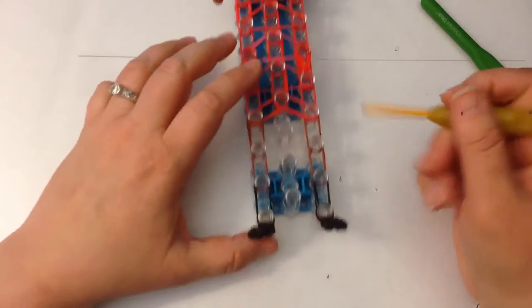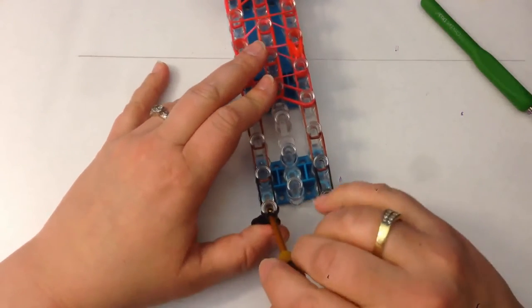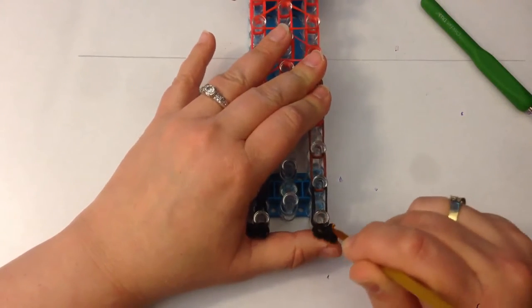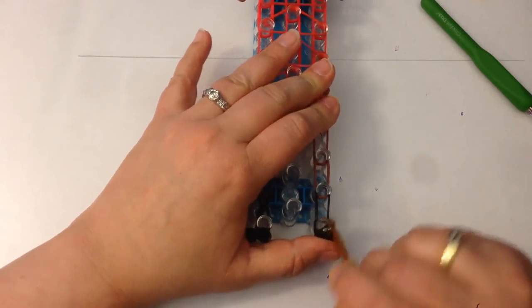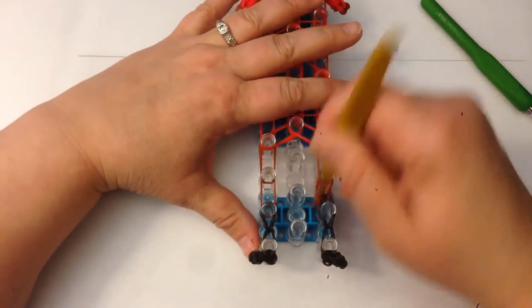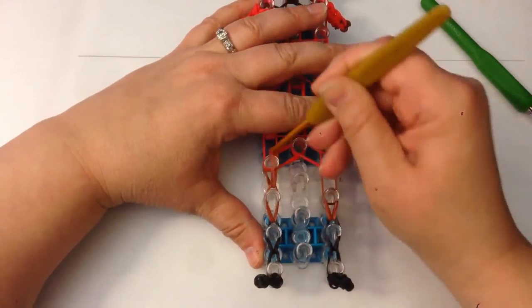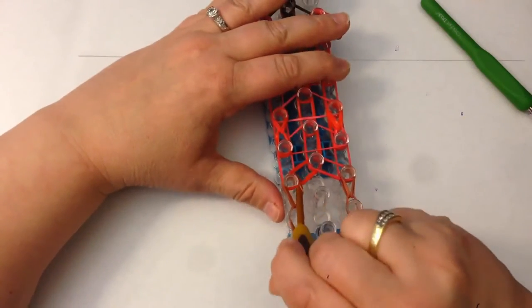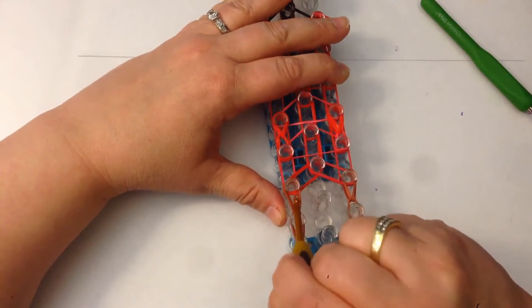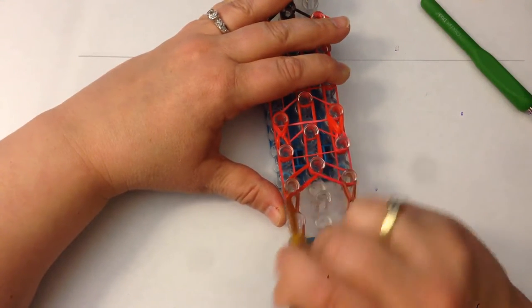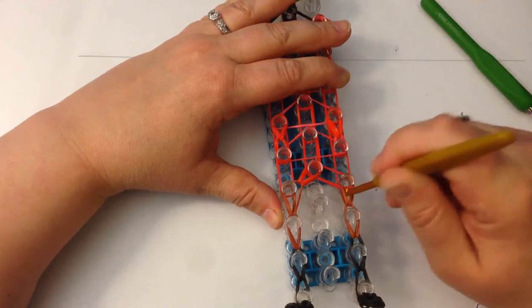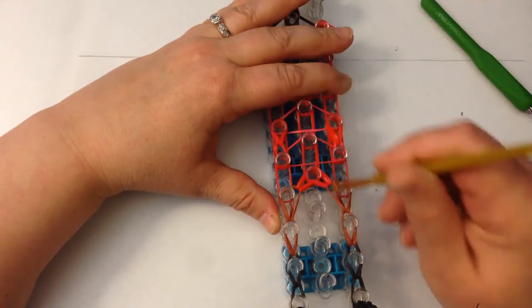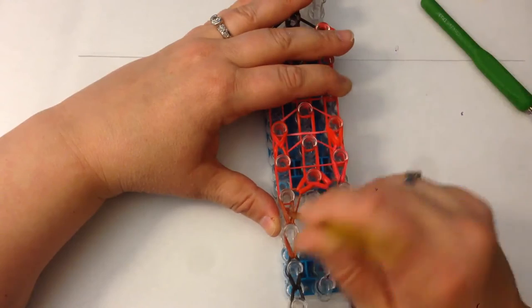Push your hook down, grab the two bottom bands and loop up. I'm going to do it on both sides because the feet can be a bit fiddly. I'm going to loop the sides, grab the two top red bands, and then the bottom two.